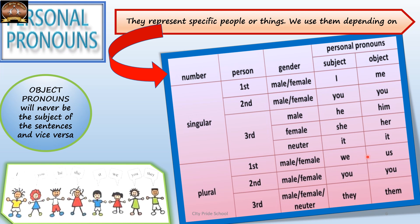Plural pronouns are: we, us, you, they, them. They are also classified on the basis of person. First person is I and me — the speaker. Second person is you. Third person is he, him, she, her, it. Plural first person is we and us, plural second person is you, and plural third person is they and them.